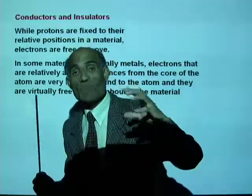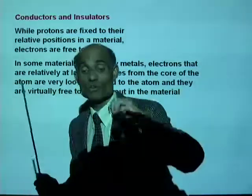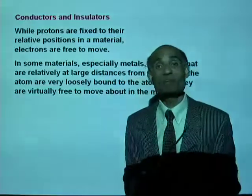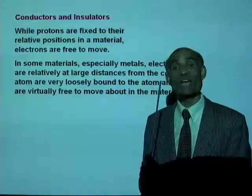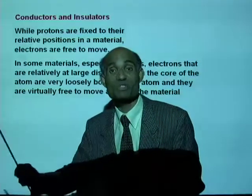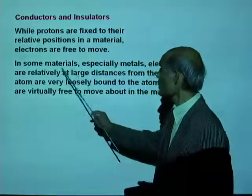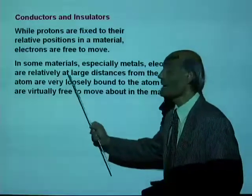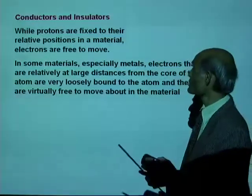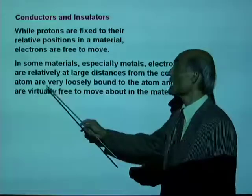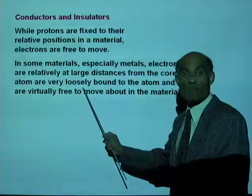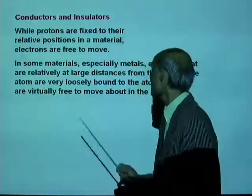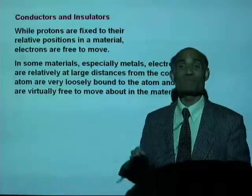A metal allows the free flow of electrons in it, and such a material is called a good conductor of electric charges. In some materials, especially metals, electrons that are at large distances from the core of the atom are rather loosely bound and are virtually free to move about in the material.